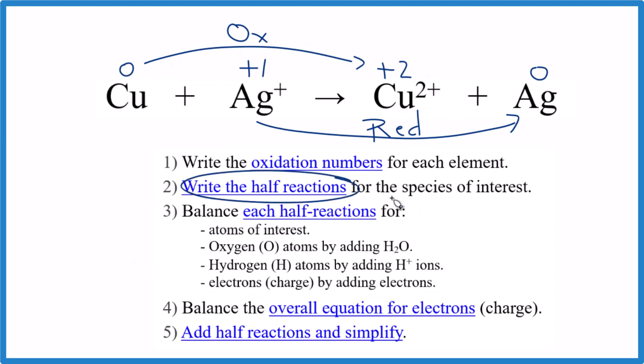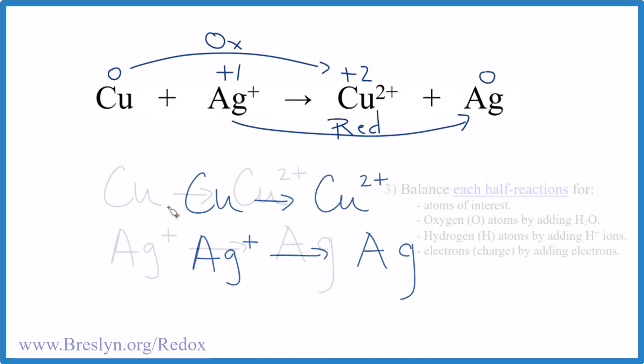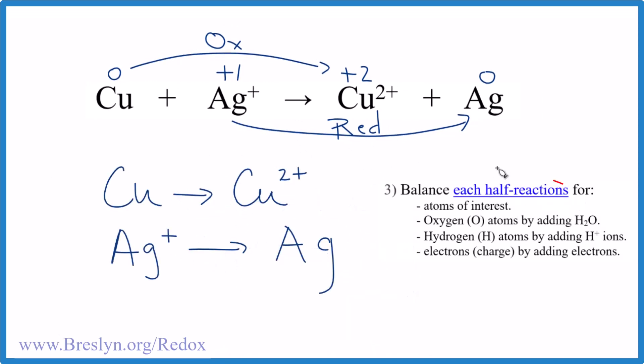So now we can write those half reactions. We have our oxidation reaction right here and our reduction reaction. We want these to be balanced. So we have some rules to help us do that. First off, we balance the atoms. We have copper here, copper here, silver here, silver here. They're the same, so that's balanced. Then we would balance the oxygen atoms and the hydrogen atoms, but there aren't any. So we're done there.